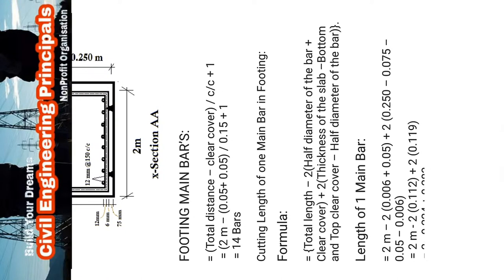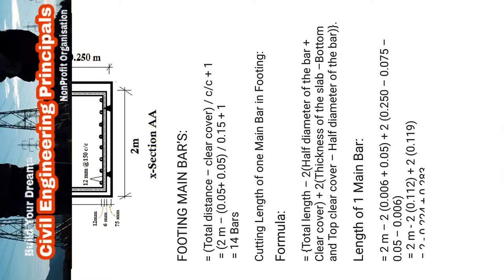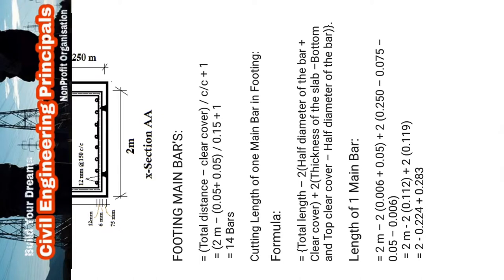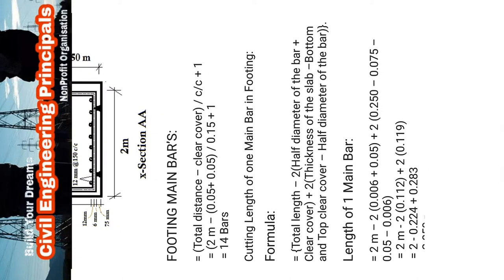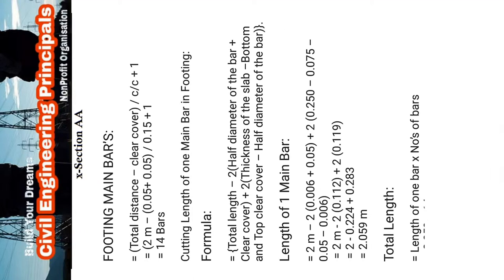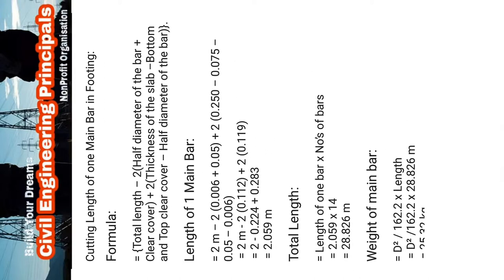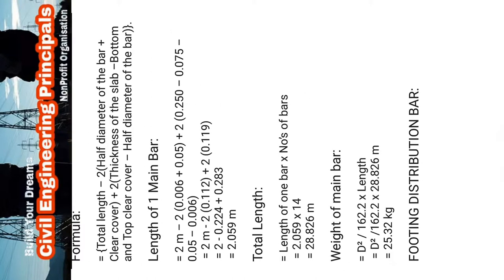Cutting length of one main bar formula: (Total length divided by 2) multiply by half diameter of the bar, plus concrete cover, plus two times thickness of the slab, minus bottom and top cover, minus half diameter of the bar. Solving the equation, we find the length of one main bar equals 2.059 meters.